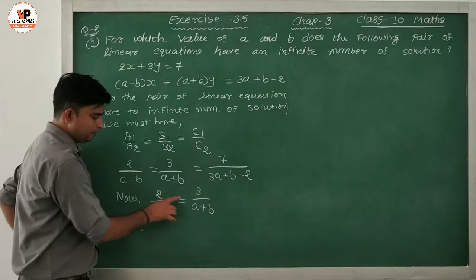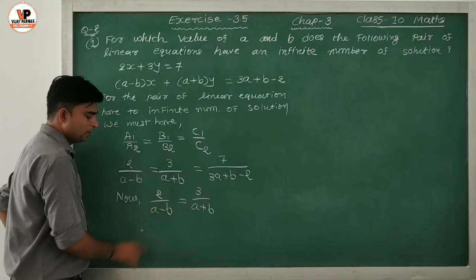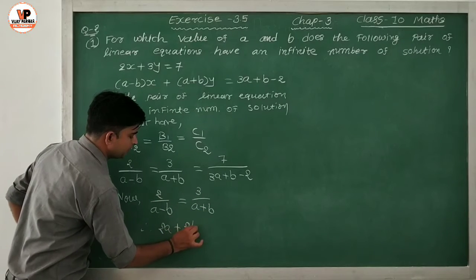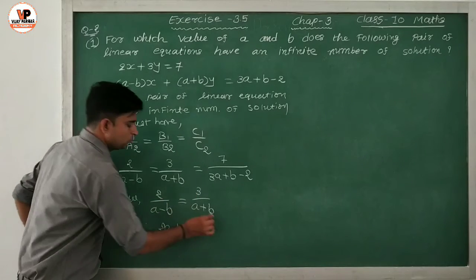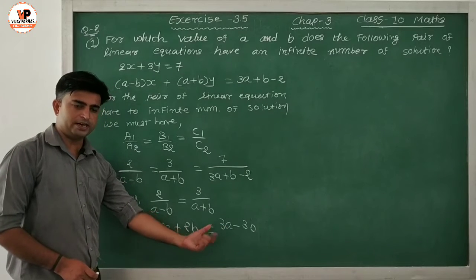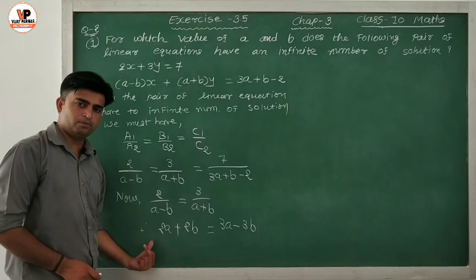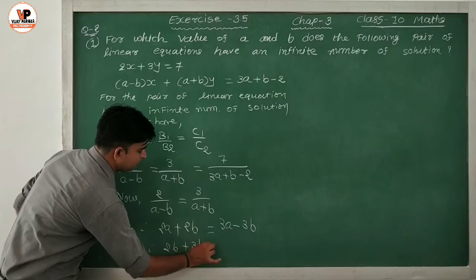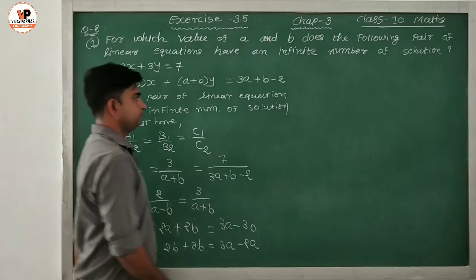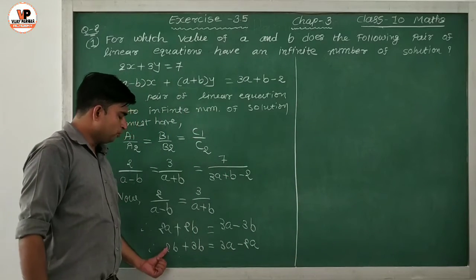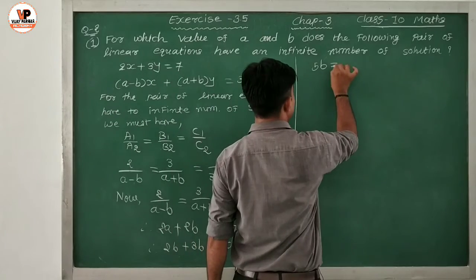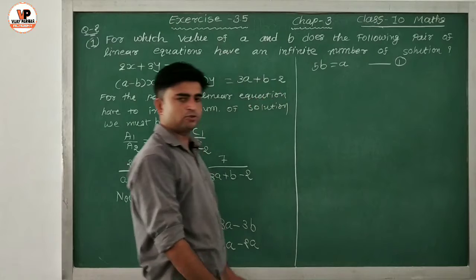Now we take cross multiplication. 2 ka multiply (A + B) ke saath hoga: 2A + 2B. Is equal to 3 ka multiply (A - B) ke saath: 3A - 3B. Next step: 2A ko right hand side move karenge — negative ho jayega — aur minus 3B ko left side move karenge — positive ho jayega. So 2B + 3B = 3A - 2A, which gives 5B = A. We get Equation 1: A = 5B.